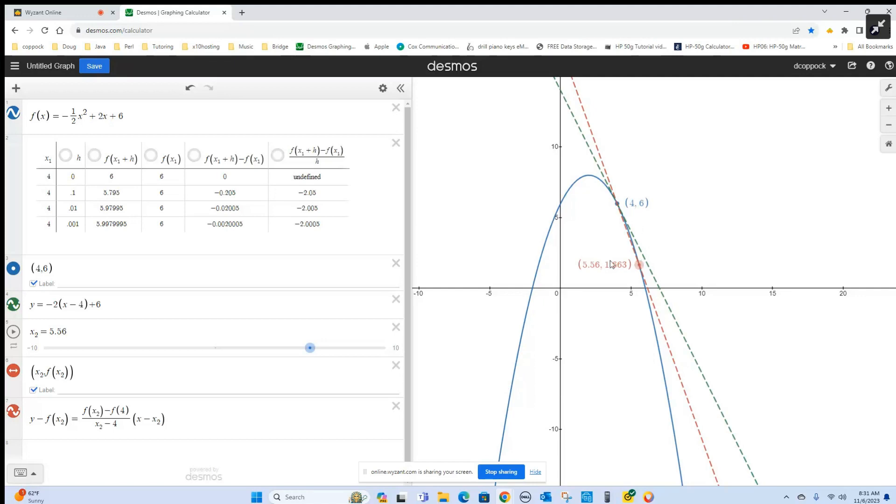Right now, h is 5.56 minus 4, or 1.56. If I have to calculate the slope of the line between (4, 6) and this point, that's actually the slope of this red dashed line, which is called a secant line. As I move this point closer and closer to 4, notice how that red line is getting closer and closer to the green dashed line.